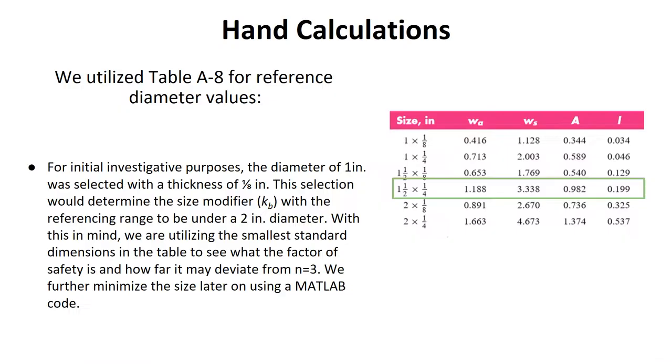In the hand calculations portion, we utilize table A-8 in the appendix for reference diameter values. For our initial purposes, a diameter of 1 inch was selected with a thickness of 1/8 inch. This selection would determine the size modifier KB value, with the referencing range to be under 2 inch diameter. With this in mind, we are utilizing the smallest standard dimensions in the table to see what factor of safety is and how far it may deviate from N equals 3. We further minimize the size later on using MATLAB.